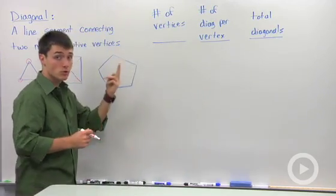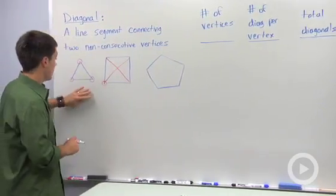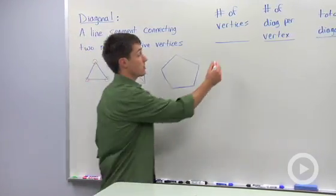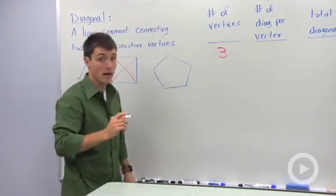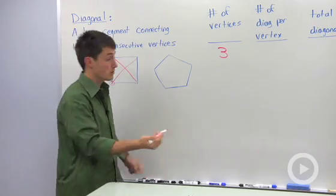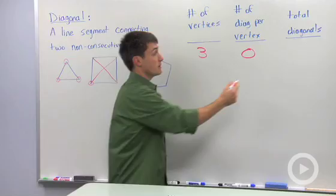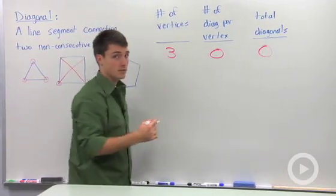So we've already started with two different polygons. We've talked about a triangle. Number of vertices in a triangle? Well, that's just three. The number of diagonals we said was zero, because there's no way for us to draw in a diagonal, which means our total diagonals is still zero.